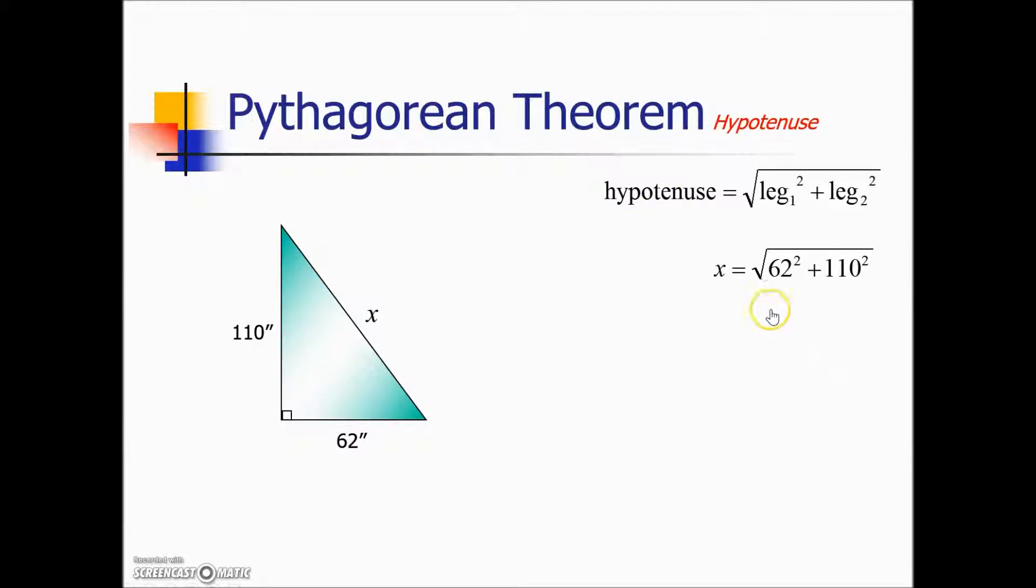Order of operations, we need to square each of those values. In other words, multiply them by themselves. Add them together and finally take the square root. So the missing length is 126.3.